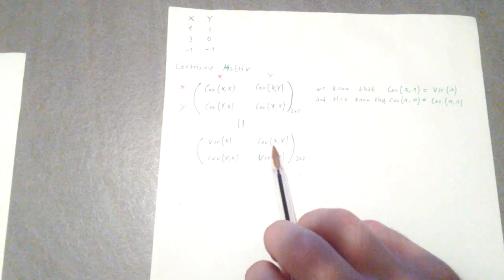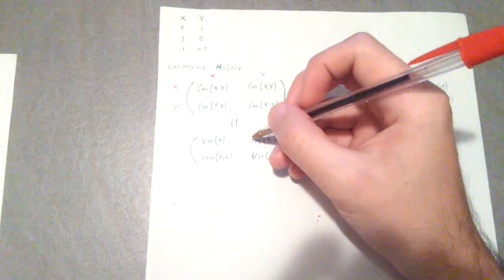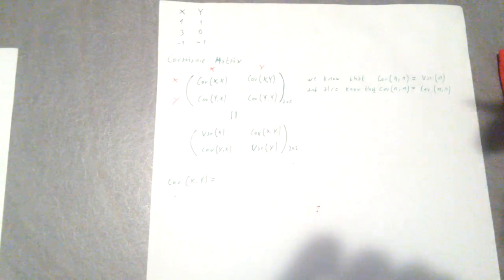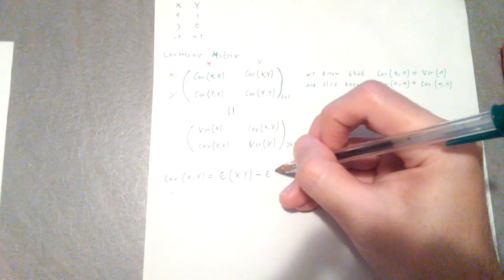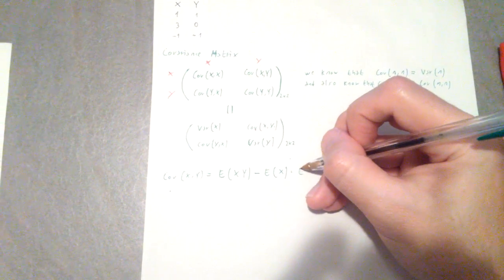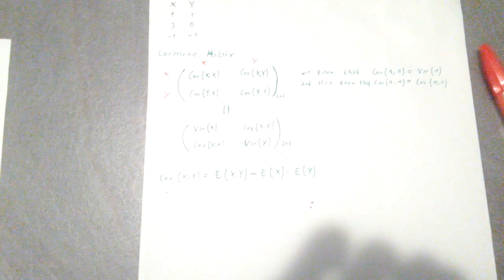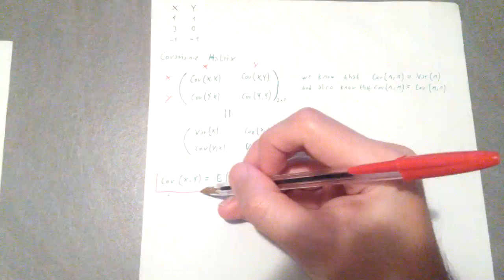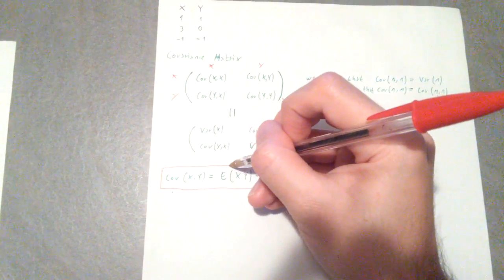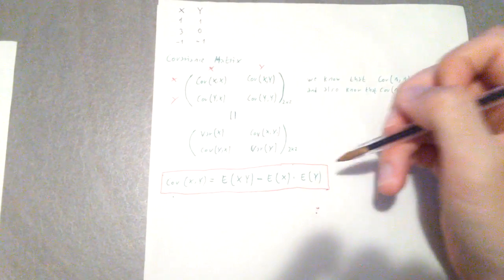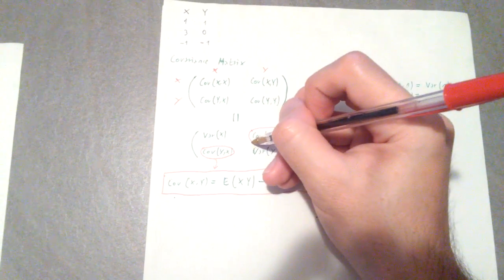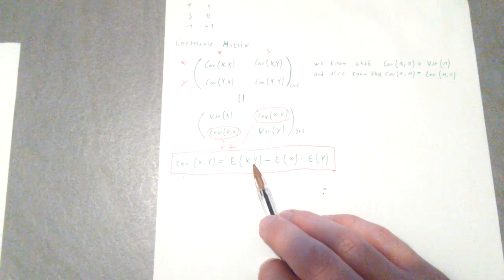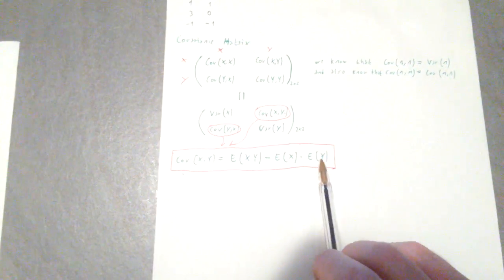First of all I want to find the covariance of x and y, which is the same as the covariance of y and x. The covariance of x and y is the expected value of xy minus the expected value of x times the expected value of y. So this is our formula for the covariance of x and y, and both off-diagonal entries are given by this same expression.